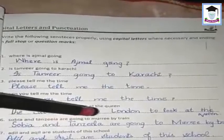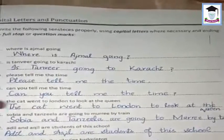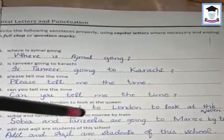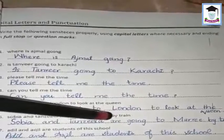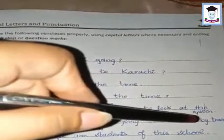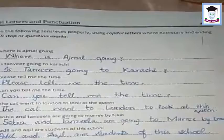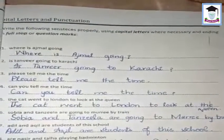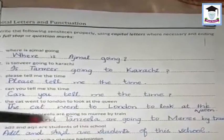The fifth sentence: 'The cat went to London to look at the queen.' 'The' — 'T' is capital, 'London' — 'L' is capital. At the end after 'queen' put a full stop.